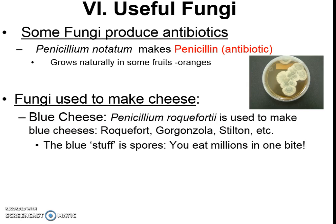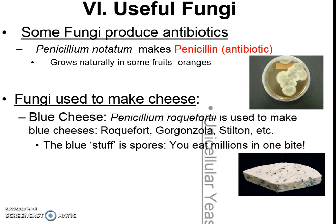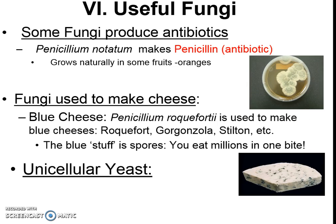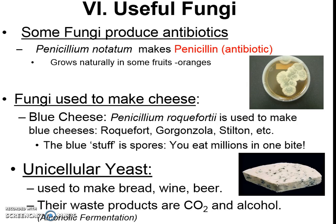That blue stuff in blue cheese is actually the fungus's spores, and you eat a lot of them when you eat blue cheese. There's also our unicellular yeast — yeast is used to make bread and sometimes wine and beer. We utilize alcoholic fermentation, producing CO2 and alcohol as byproducts, which causes bread to rise and produces the bubbling and alcohol in wine and beer.